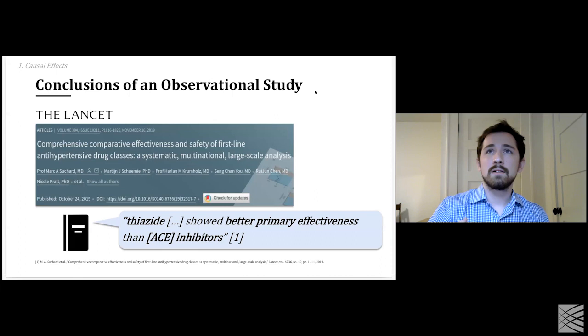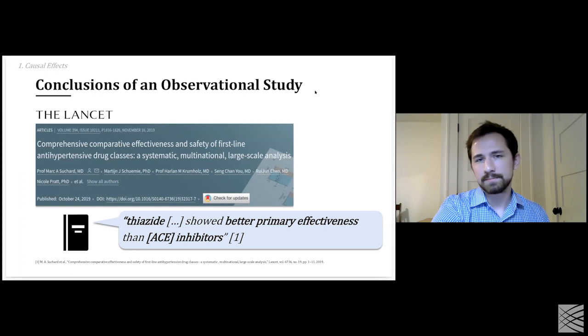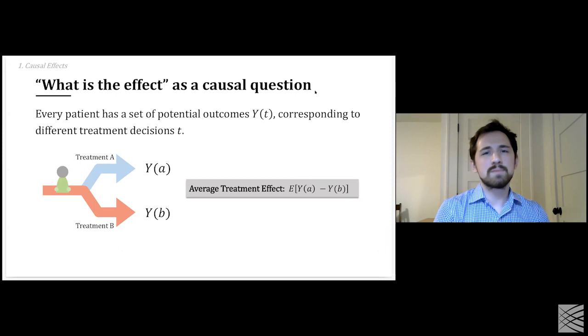The implication — the hope of this study — is that if you actually applied this in practice and gave more people thiazide and less people ACE inhibitors, then you would see better outcomes. But of course there are some tricky nuances here, which we'll start to get into.